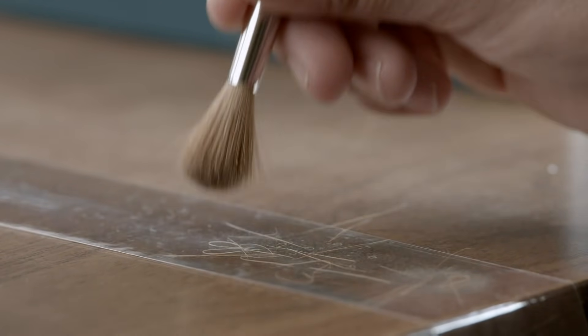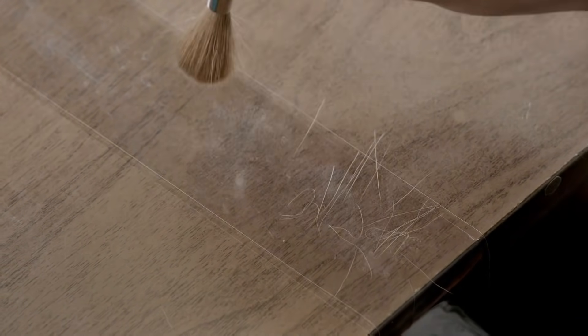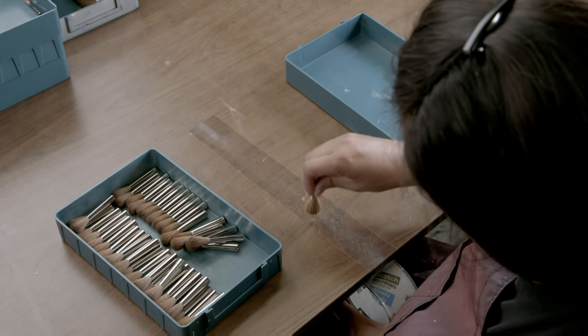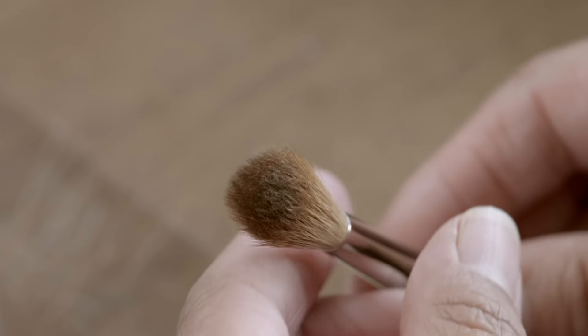Next, after the glue has been left to dry overnight, the brush head is dabbed against a strip of sticky tape to remove any short or loose hairs that haven't adhered.